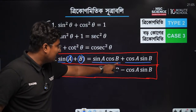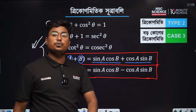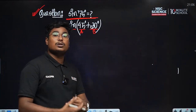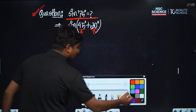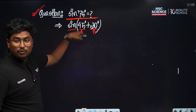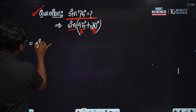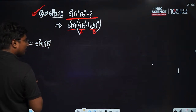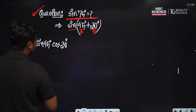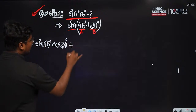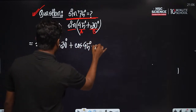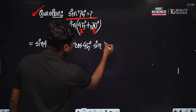Sin(a + b) = sin a cos b plus cos a sin b. So with a = 45° and b = 30°, we apply: sin 45° cos 30° plus cos 45° sin 30°.